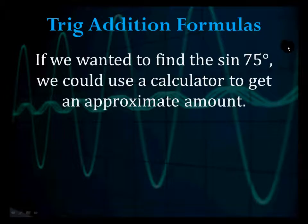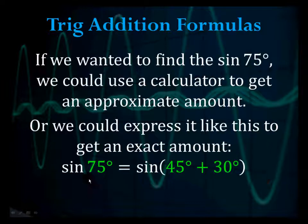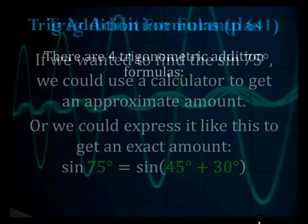If we wanted to find the sine of 75 degrees, we could use a calculator to get an approximate amount. But we could also express it as the sine of 45 plus 30 degrees — notice that's 75 — to get an exact amount. We can use the Trigonometric Addition and Subtraction Formulas to do that.